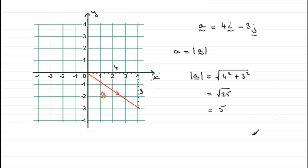And that's how you can work out the magnitude of any two-dimensional vector. Just simply do the sum of the squares of the components and square root them.